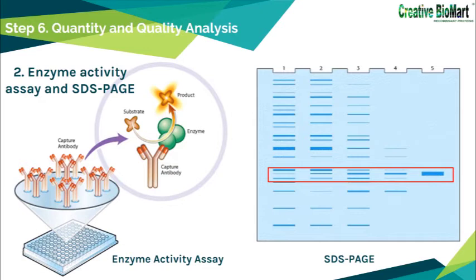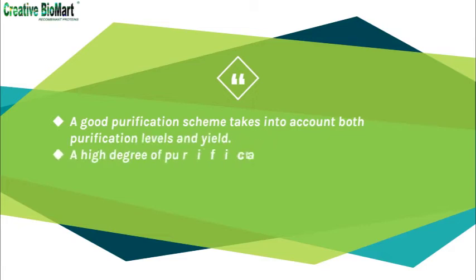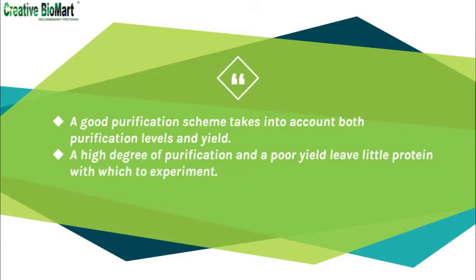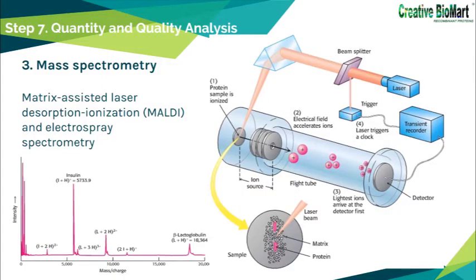Besides qualitative analysis of protein purification, we also need to quantify the target protein at each step. If the target protein is an enzyme, determine protein concentration by enzyme activity. Otherwise, semi-quantify through SDS-PAGE gel analysis of the percentage of target protein in total sample. A good purification scheme accounts for both purification levels and yield. Mass spectrometry can determine the target protein mass more precisely using matrix-assisted laser desorption ionization (MALDI) and electrospray spectrometry.